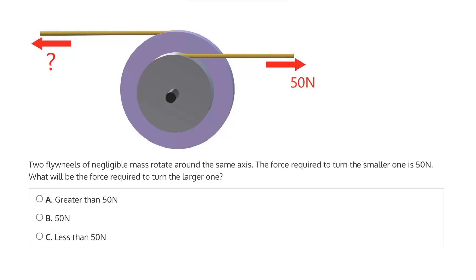So to rotate either of these flywheels, some torque will be required. And the torque is characterized by the force and the moment arm. And in this case, the moment arm is equal to the radius of each flywheel.